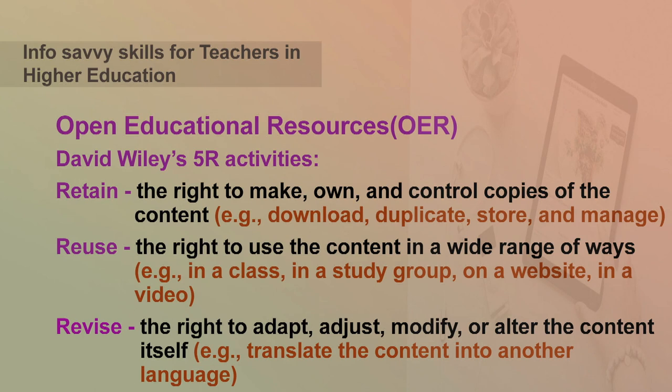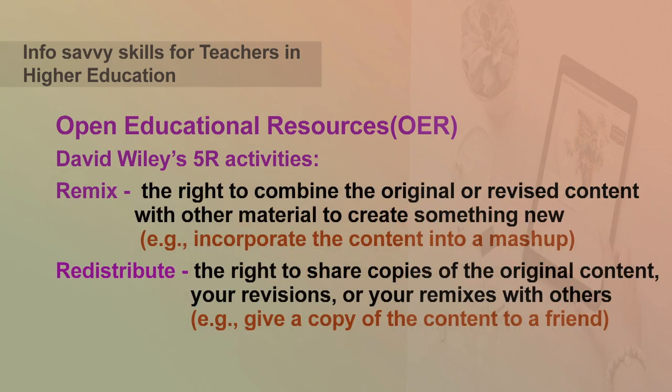For example, if you have downloaded some content, you should be able to edit and translate that content. The next R is Remix — the right to combine the original or revised content with other material to create something new. The last R is Redistribute — the right to share copies of the original content, your revisions, or your remixes with others.